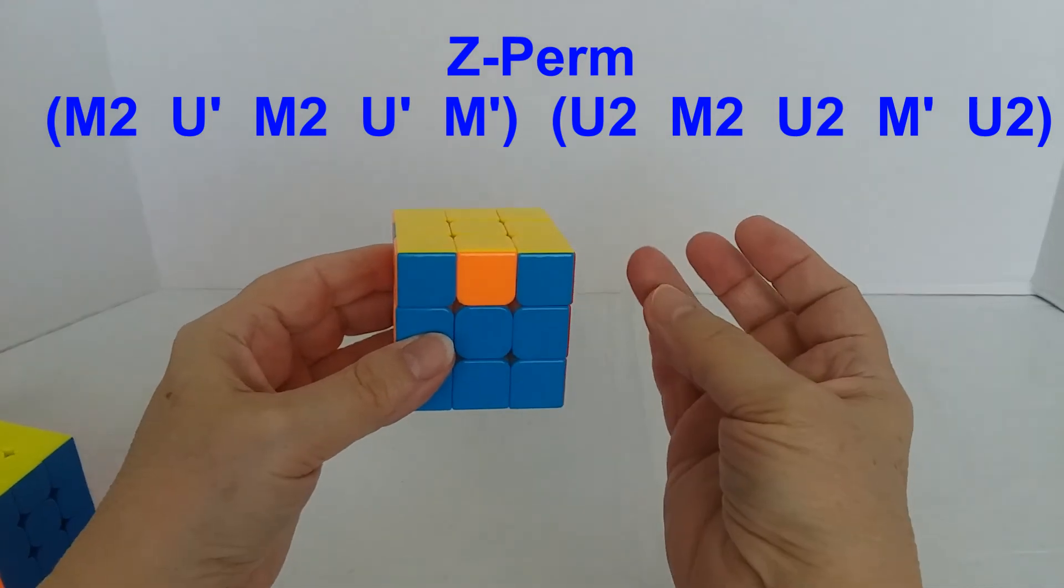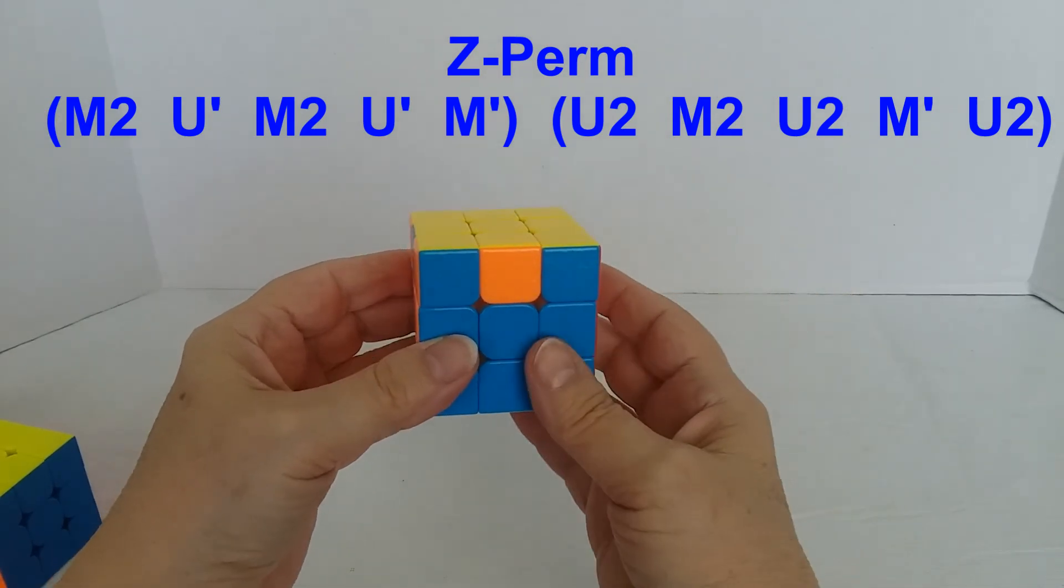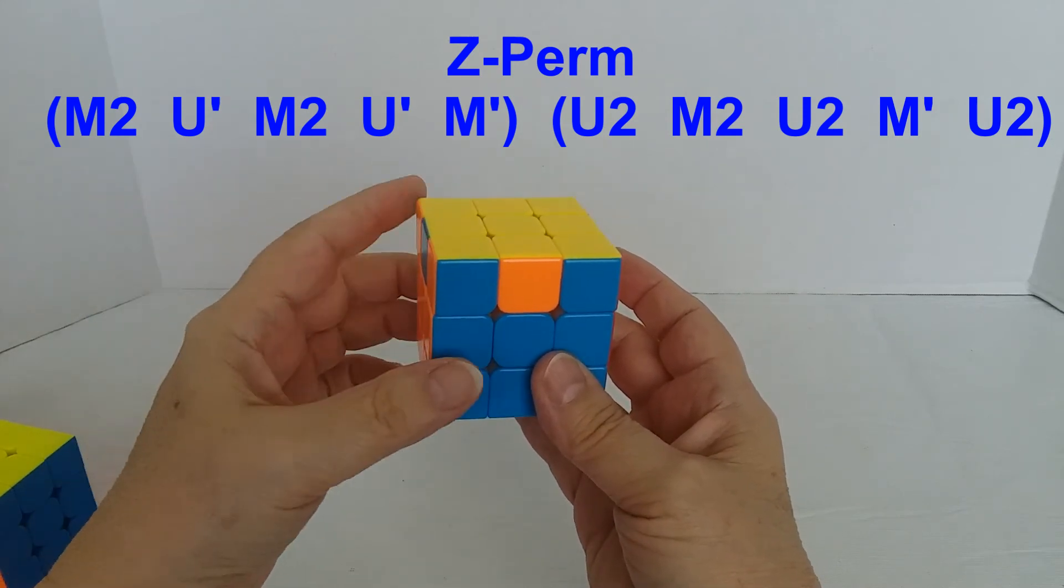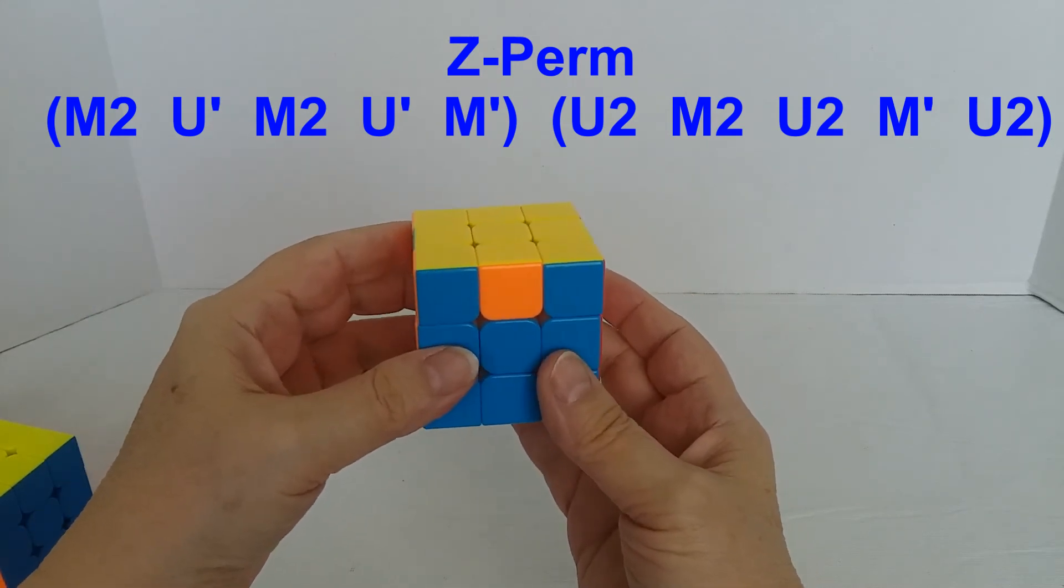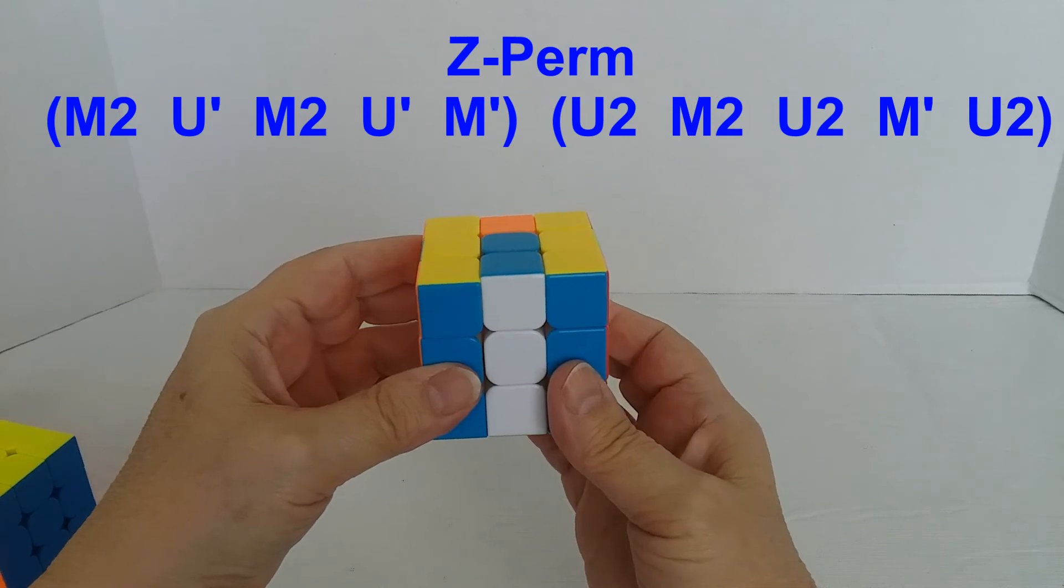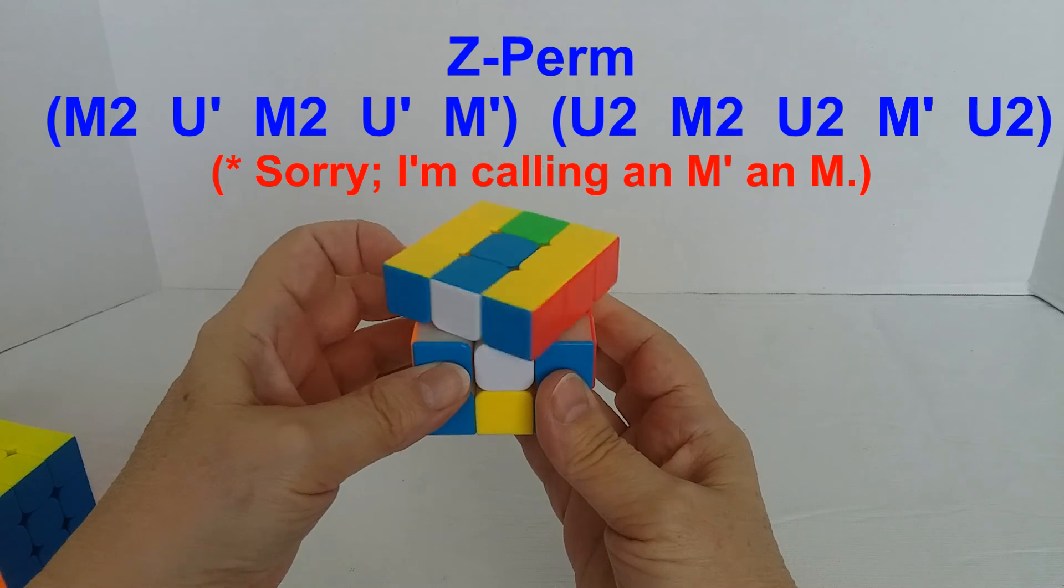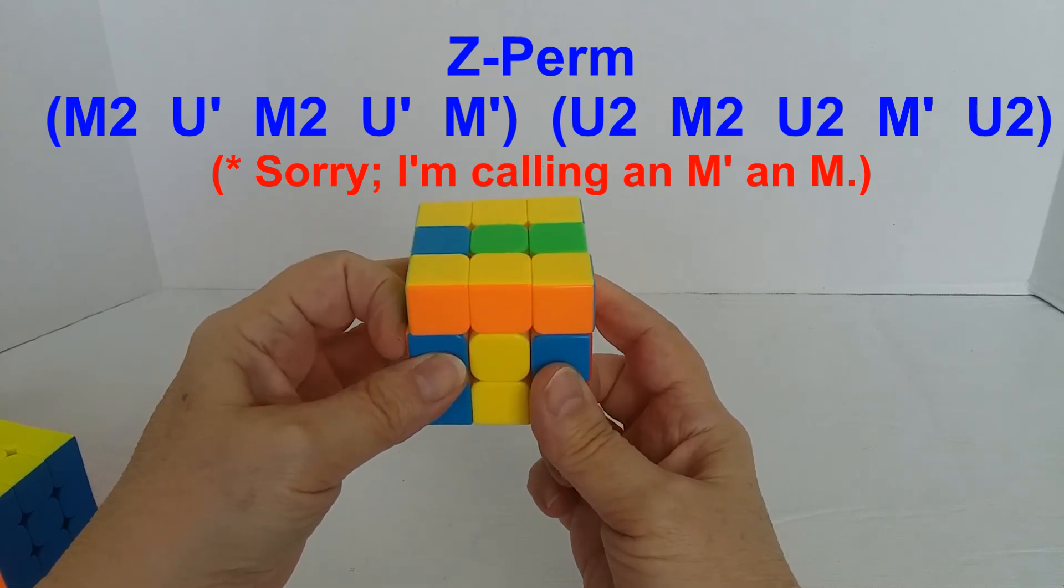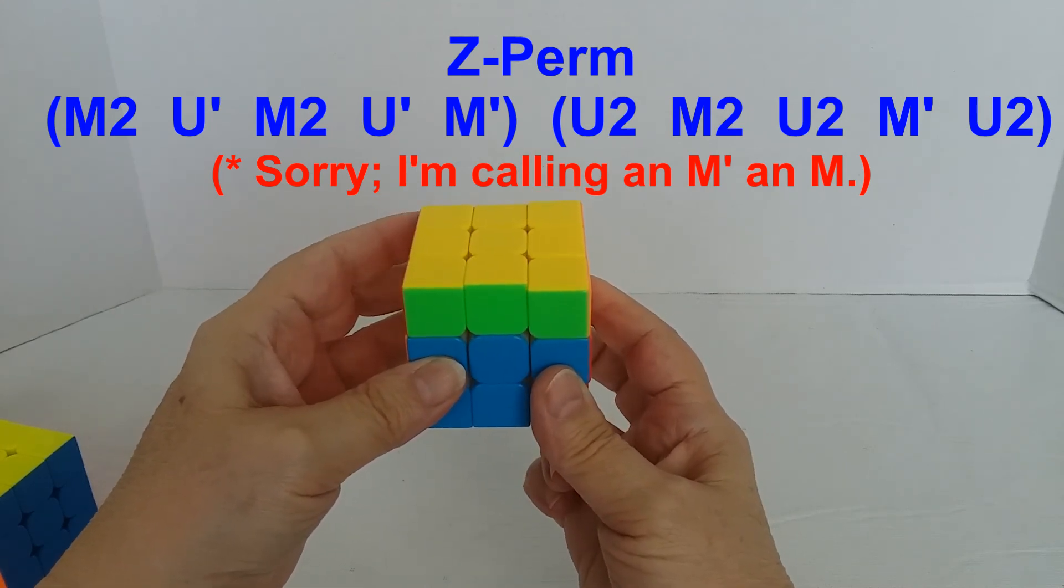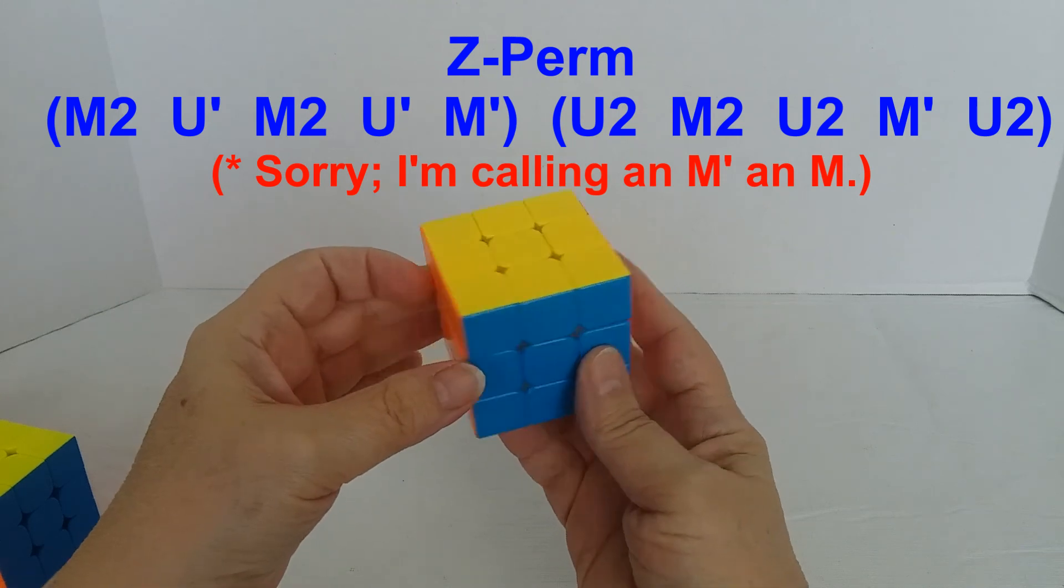Again I use this ring finger with my right hand for the M moves and I use my index finger here for U's. And this is M2, U prime, M2, U prime, M, U2, M2, U2, M, U2. And there it is.